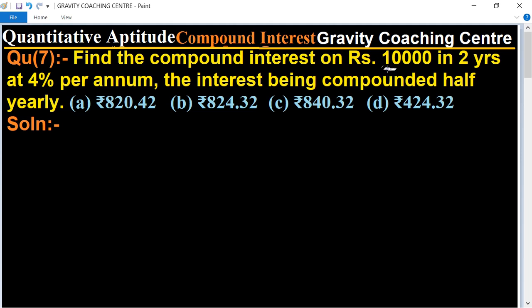In this question, given: ten thousand is the principal, time equals 2 years, and rate of interest equals 4% per annum compounded half yearly. So we use the formula to find amount: A equals